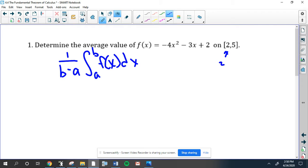a is 2, b is 5. That's always (a, b). So we have 1 over 5 minus 2 and I just wrote 9. I have no idea why I just did that. Times the integral from 2 to 5 of that function.